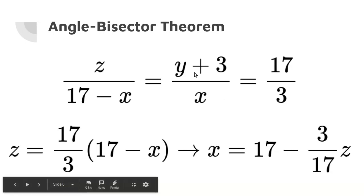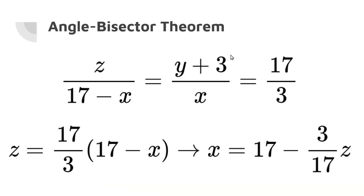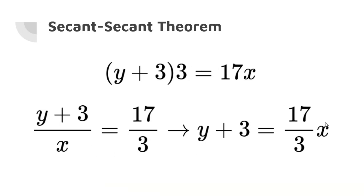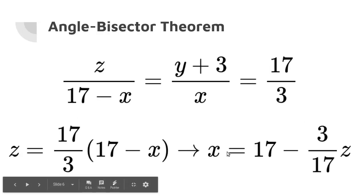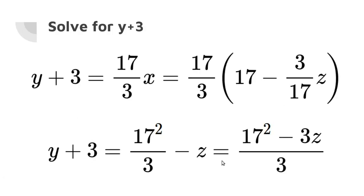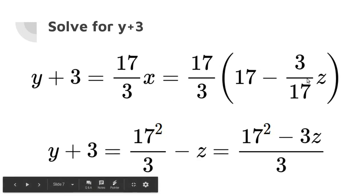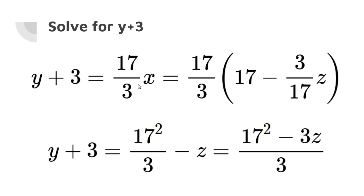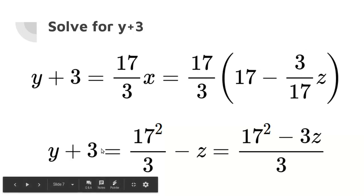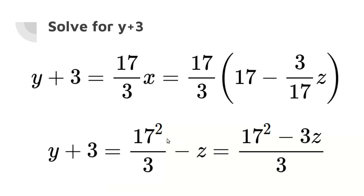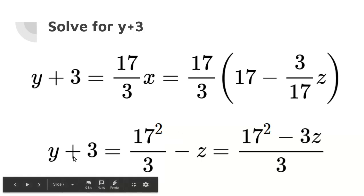Now, why did we do that? Because we wanted to solve for Y + 3 in terms of Z, didn't we? Well, earlier, we solved for Y + 3 in terms of X. And now we have X in terms of Z. So with those two equations, we can substitute and solve for Y + 3 in terms of Z. So Y + 3 equals 17 thirds X, which we found earlier, which is 17 thirds times (17 minus 3 seventeenths Z). Now multiply this fraction into this binomial, and you get Y + 3 equals 17 squared over 3 minus Z. And then we want to make it an improper fraction because in general, improper fractions are easier to deal with. So we have Y + 3 is (17 squared minus 3Z) all over 3.